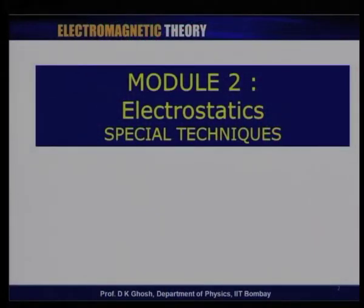We have been talking about special techniques in solving problems of electrostatics, using the advantage given to us by the uniqueness theorem in solving Laplace's and Poisson's equation. What we did last time is to talk about the problem of a point charge in front of a grounded conducting sphere — meaning the sphere is to be maintained at zero potential.